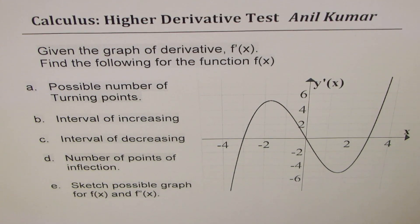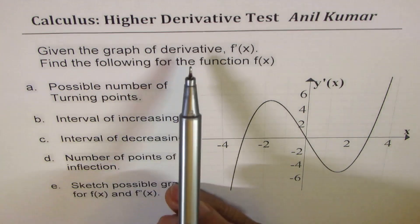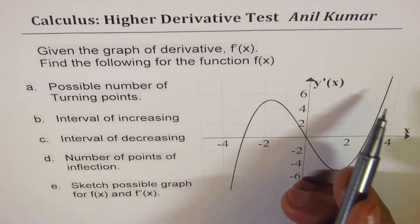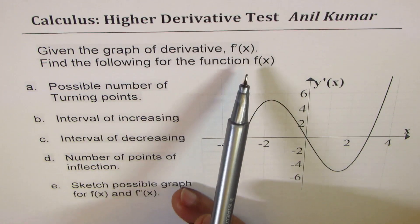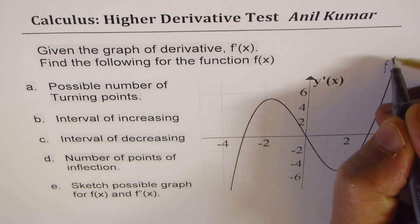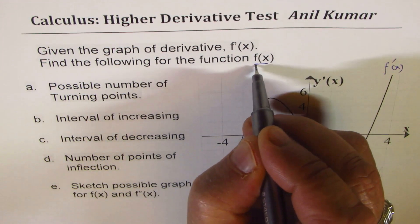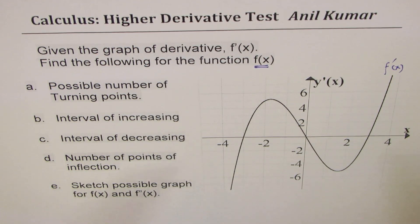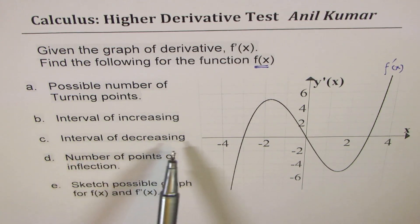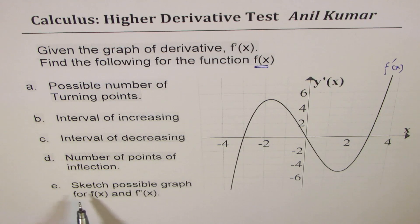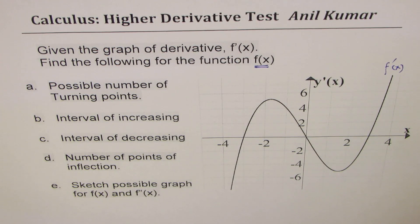I'm Anil Kumar sharing with you a test question on derivatives. The question is that we are given the graph of a derivative — so this graph is of a derivative, not of the function. We have to find all these characteristics for the function: possible number of turning points, interval of increasing, interval of decreasing, number of points of inflection, and then sketch a possible graph for the function and its second derivative.